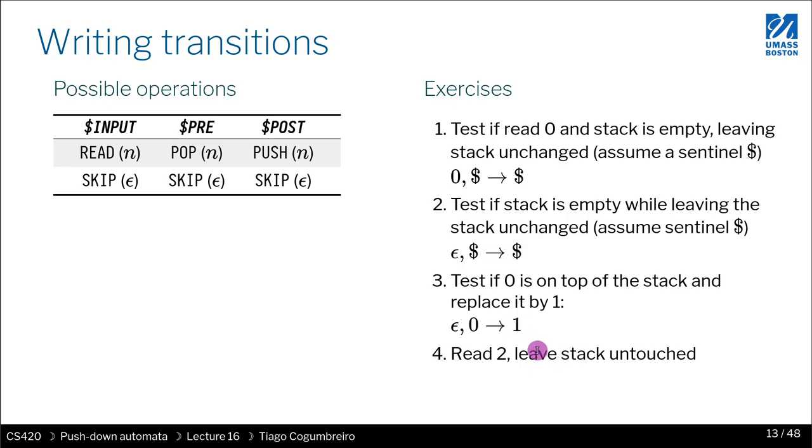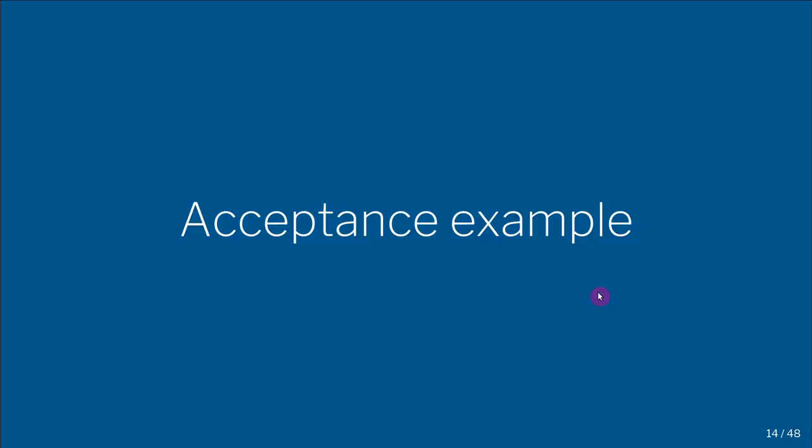Okay, what you can do is skip, pop zero, and push one. Finally, what if I just want to read two from the input and leave my stack untouched? How do I do that? Hit pause. Okay, you can do it by just hitting skip on each of them.